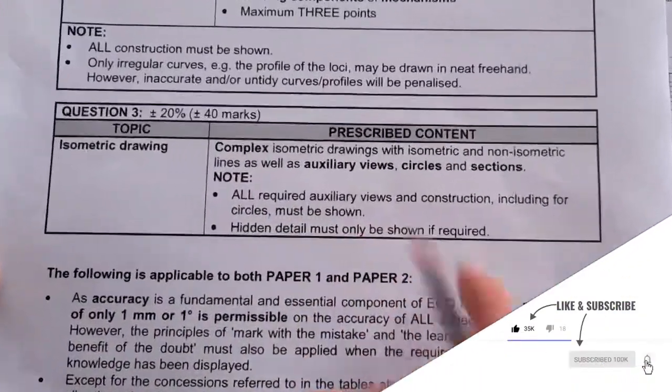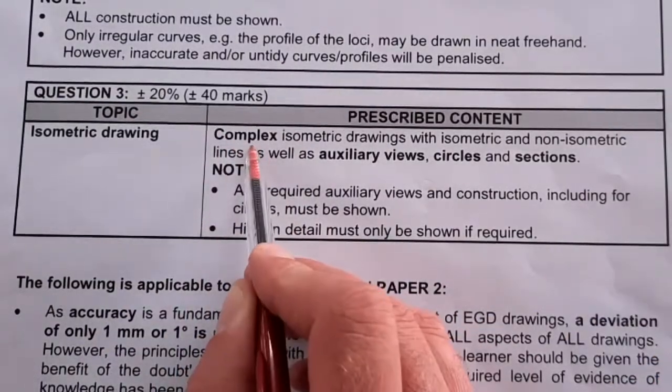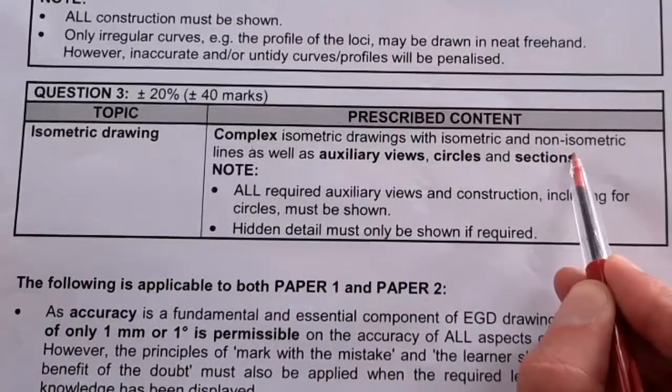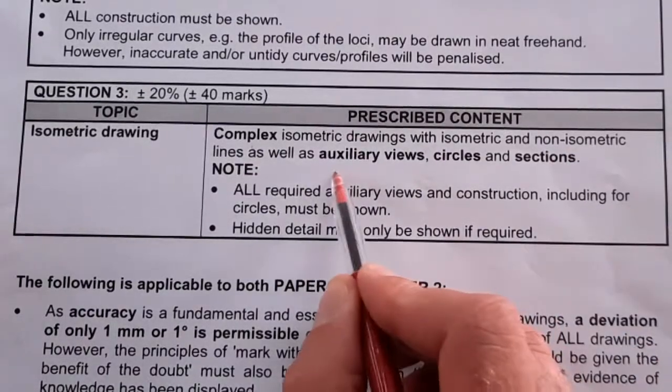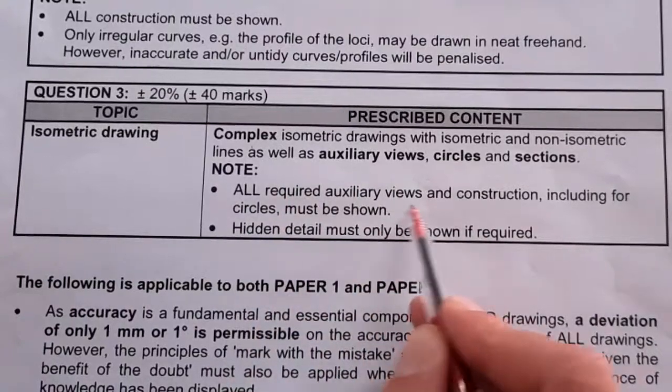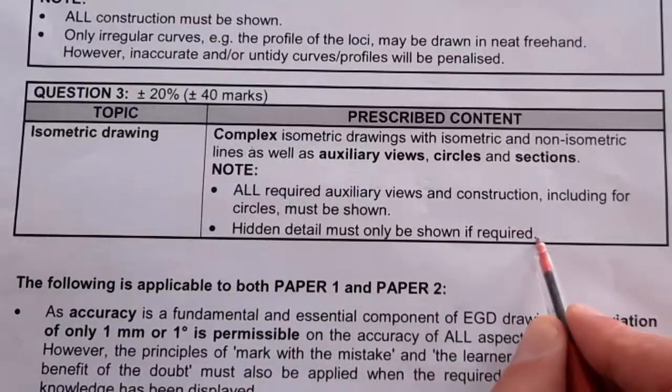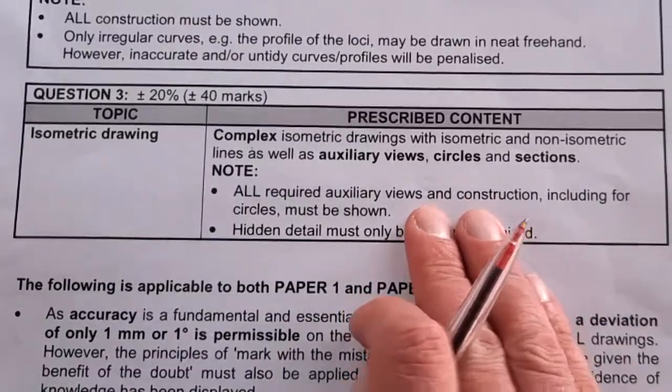Before we go to the memos and the actual questions, look at what is stated here. The isometric will be complex with isometric and non-isometric lines, as well as auxiliary views, circles, and sections. All required auxiliary views and construction details for the circles must be drawn by you. Hidden detail must only be shown if required.